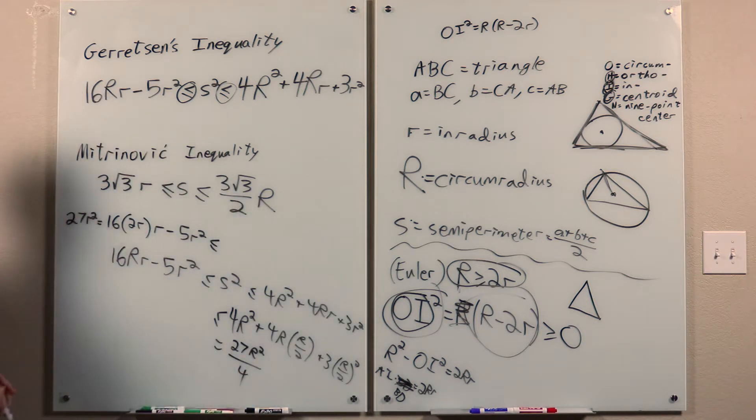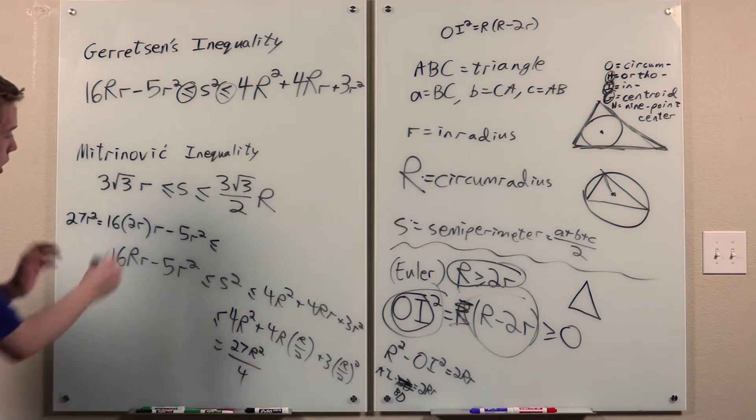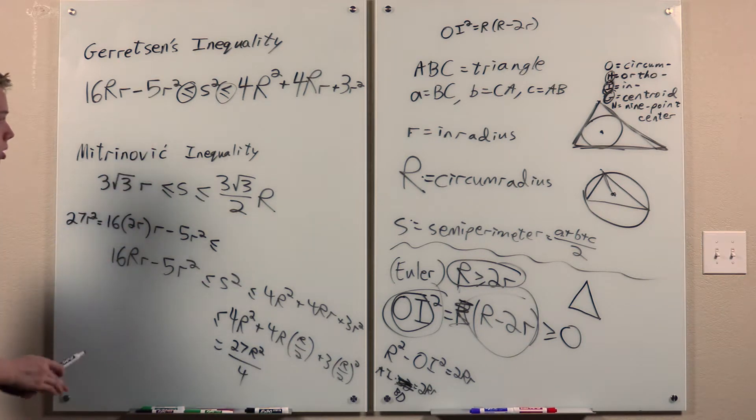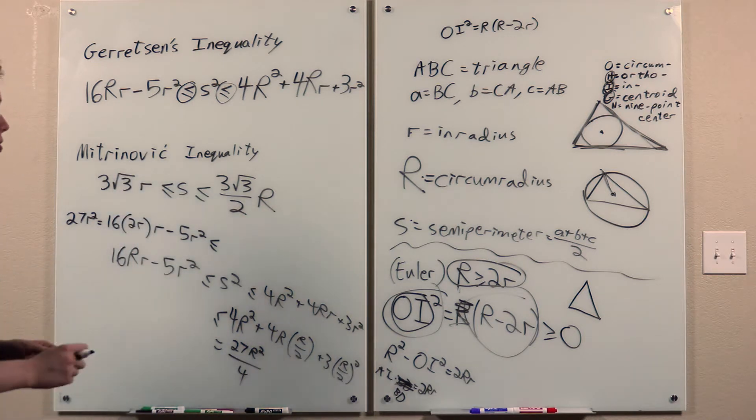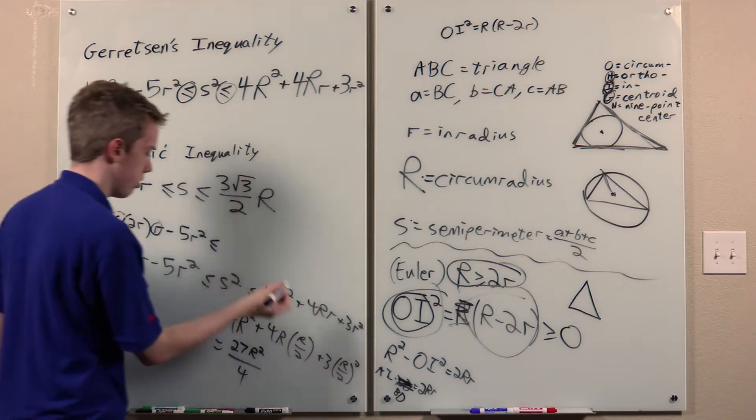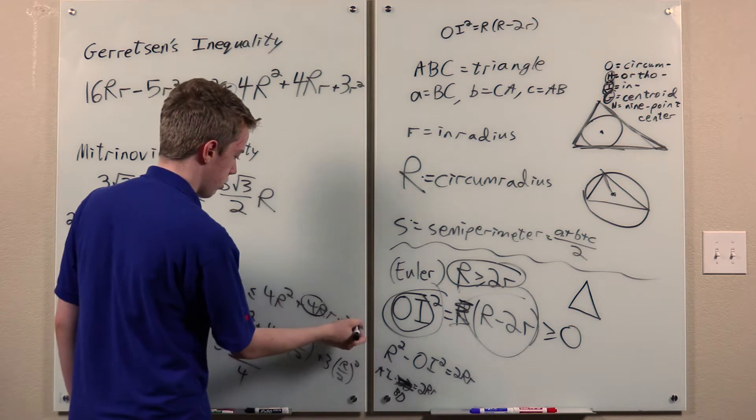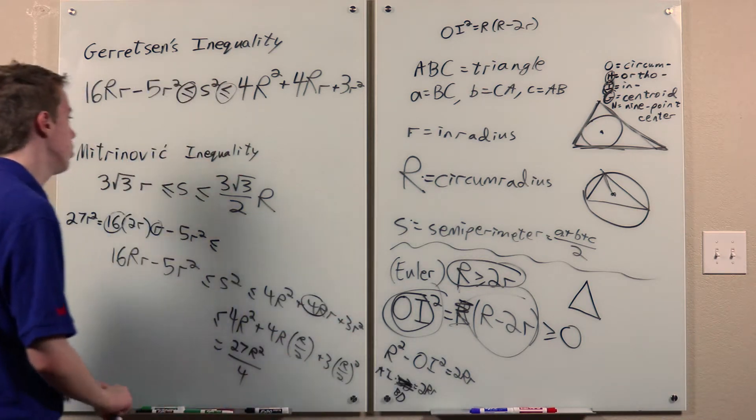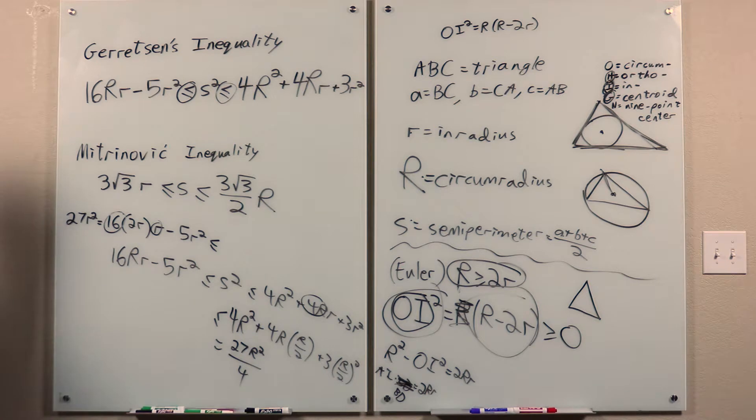And then taking square roots gives us the desired inequality. And we can see that for equality to hold, it's necessary to have equality in either one, it's necessary to have equality in Gerretson's inequality. And so we need the triangle to be equilateral, and it's easily computed that that's also sufficient for equality to hold. The manipulations we did are valid because 16r is positive, 4r is positive, both r's are positive. That gives us the Mitrinovich inequality.